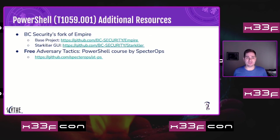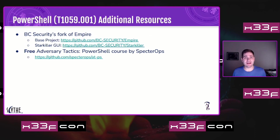A couple of additional resources: BC Security forked Empire after it was sunset by SpectraOps and added a GUI called Starkiller. SpectraOps also deprecated and released their free adversary tactics PowerShell course — lots of good exercises, labs, slides, and it's a four-day class. I took it back in 2017 and still recommend checking it out.